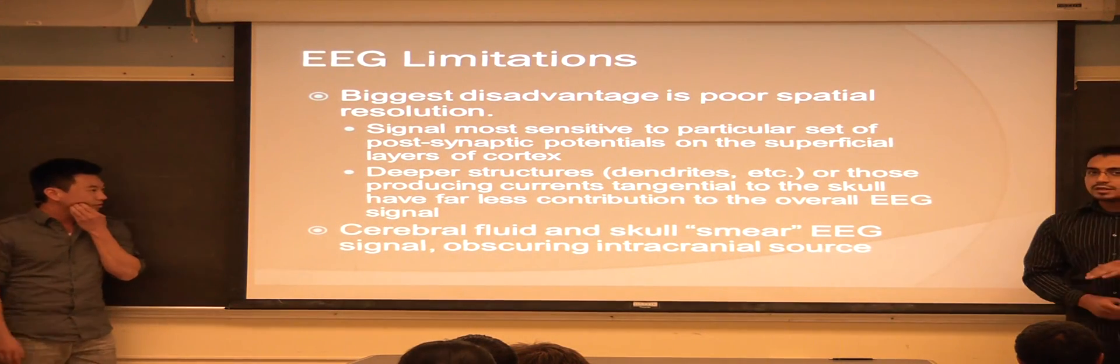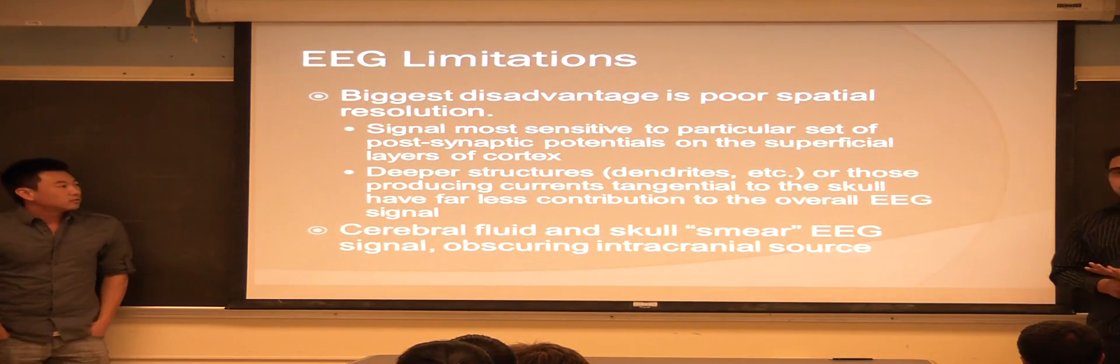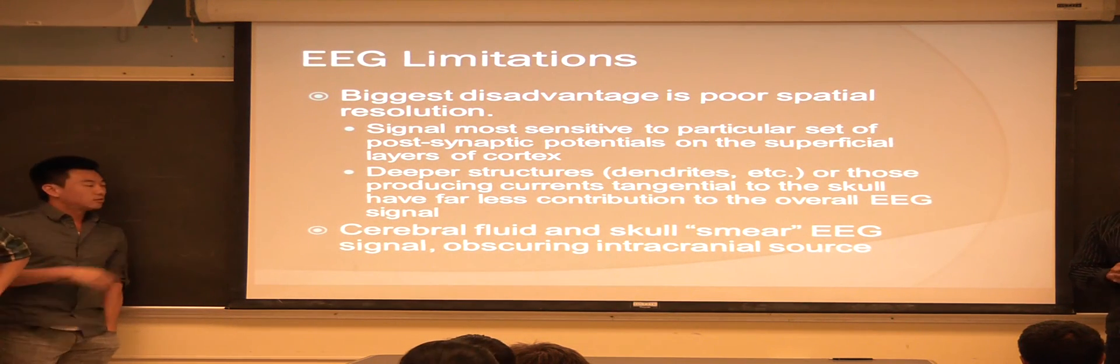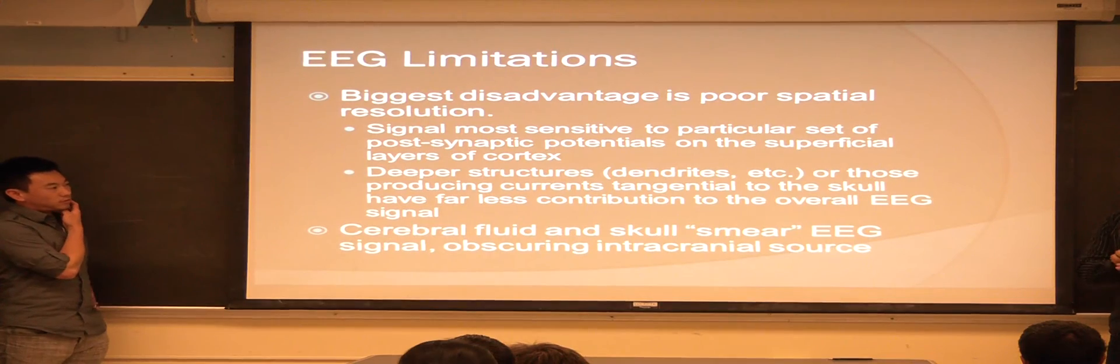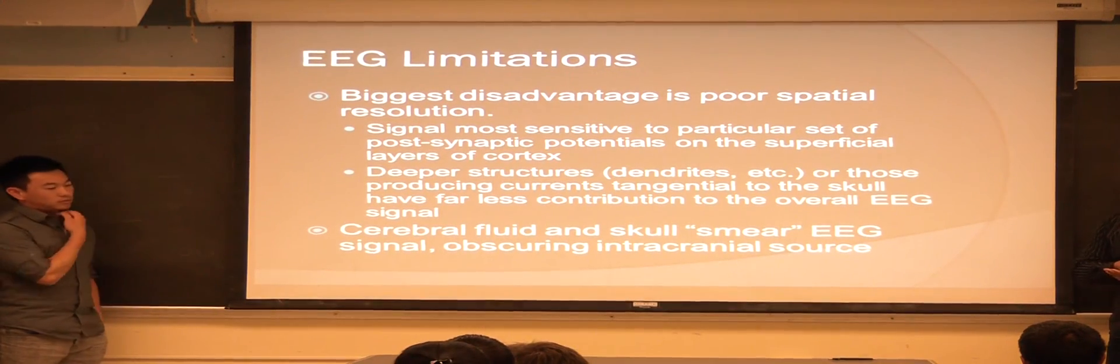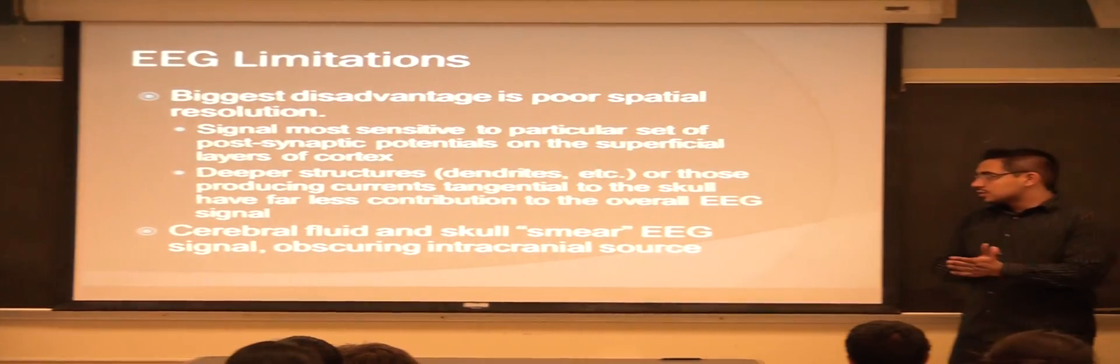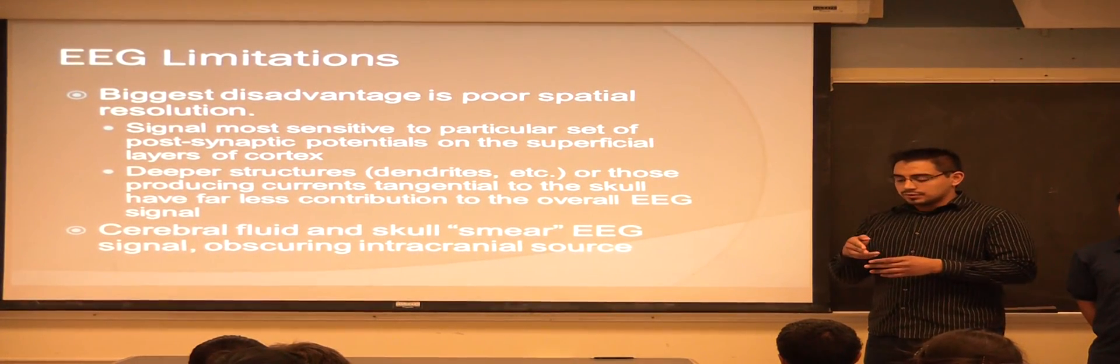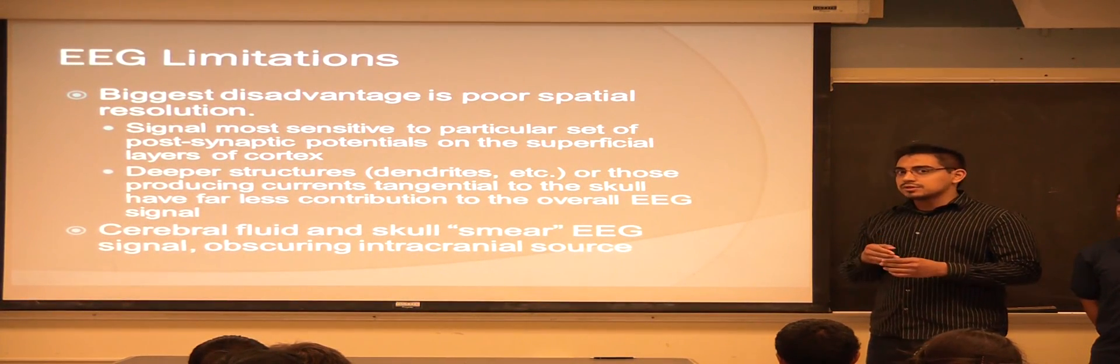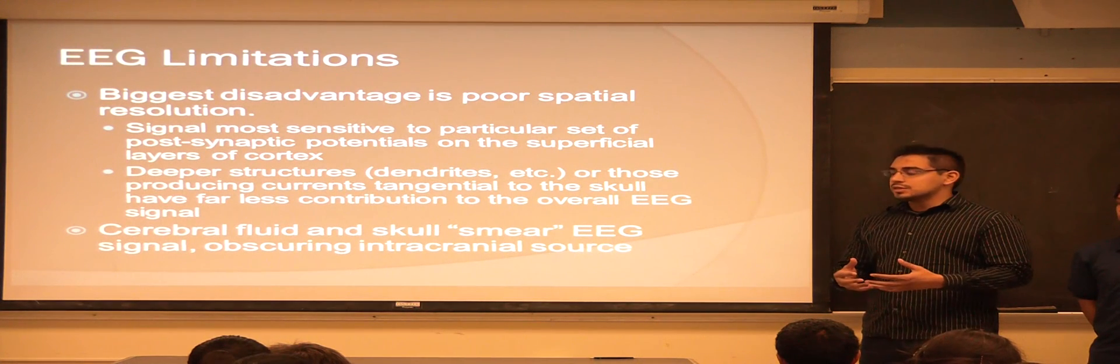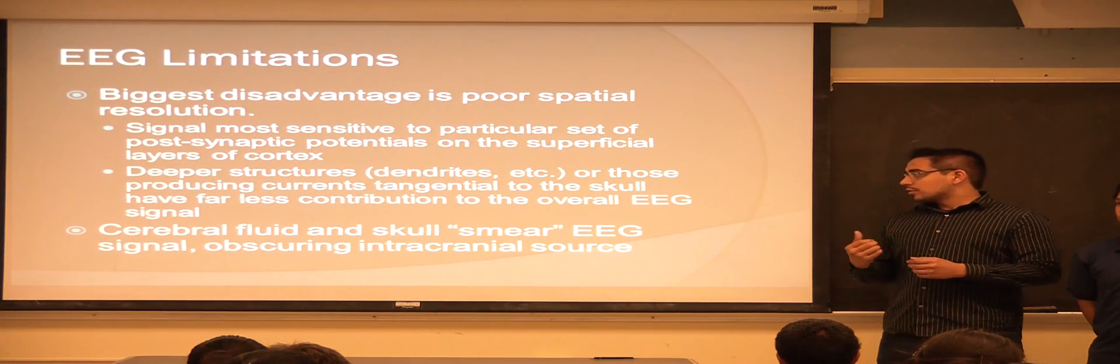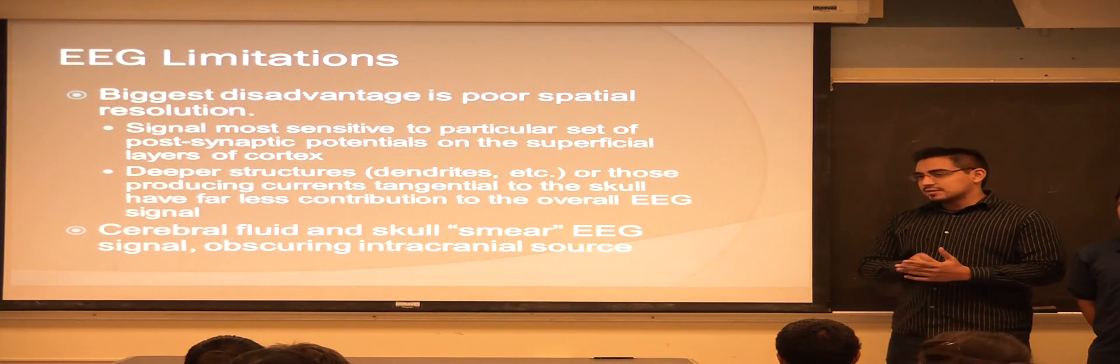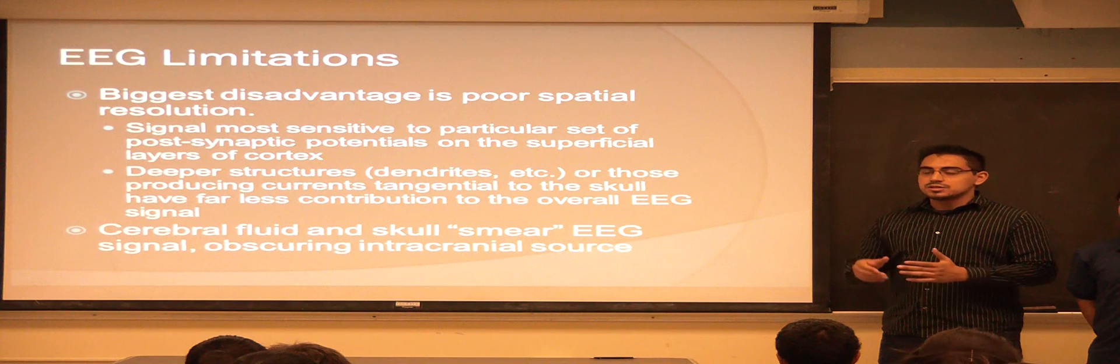One of the main problems with the EEG is that it has very poor spatial resolution. The signal is most sensitive to only a certain portion of post-synaptic potentials located at a certain portion of the cortex. Also, structures and certain electrodes that fire tangential to the skull don't really contribute to the overall EEG. And the cerebral fluid and skull smear the EEG, which causes blurriness when we take the EEG.